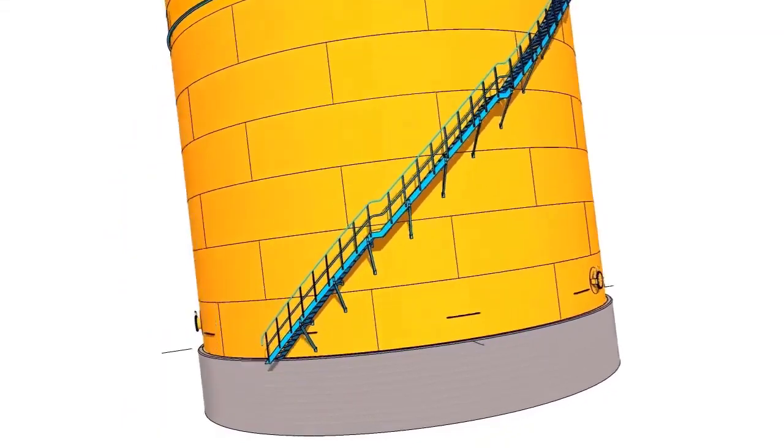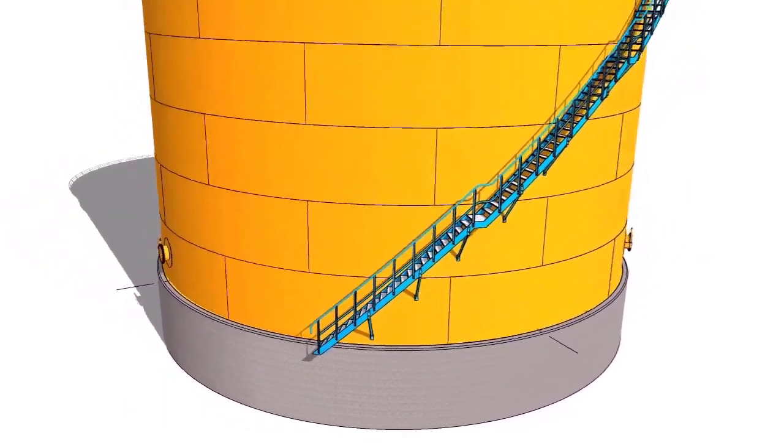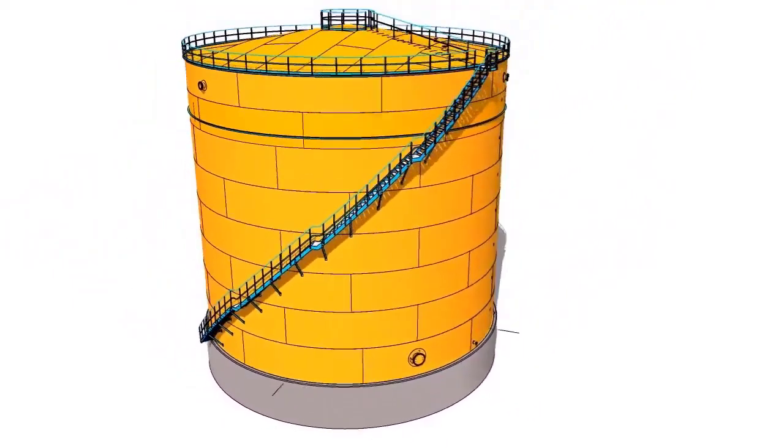Fit up and weld the annular plate with the shell. Final welding shall be between the annular plate and the bottom sketch plates.